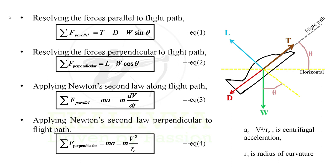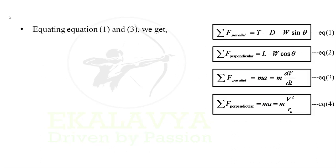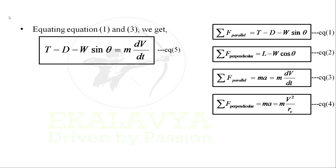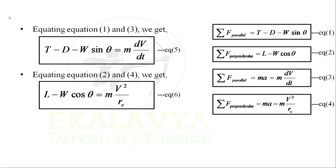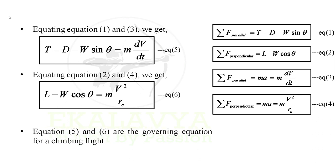Equating Equations 1 and 3, we get: T minus D minus W sin θ equals mass times dV/dt. Let us denote this as Equation 5. Equations 5 and 6 are the governing equations for a climbing flight.